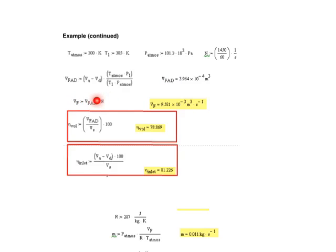The problem wants us to do a calculation with respect to time. If you look at the next line, VF, the volumetric flow rate, is equal to the volume at FAD conditions multiplied by N.